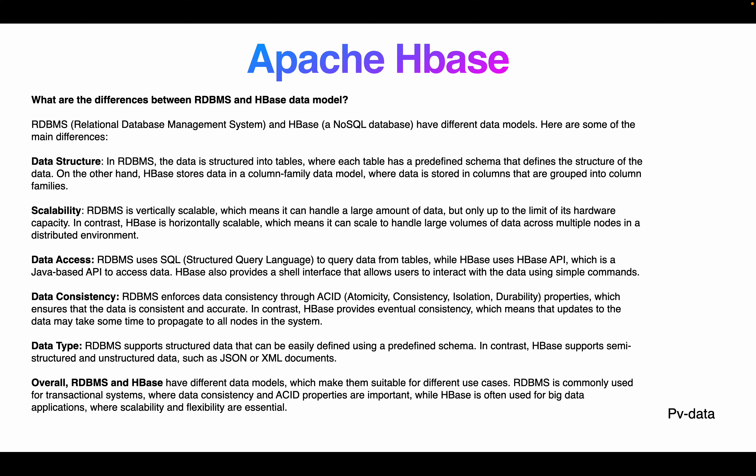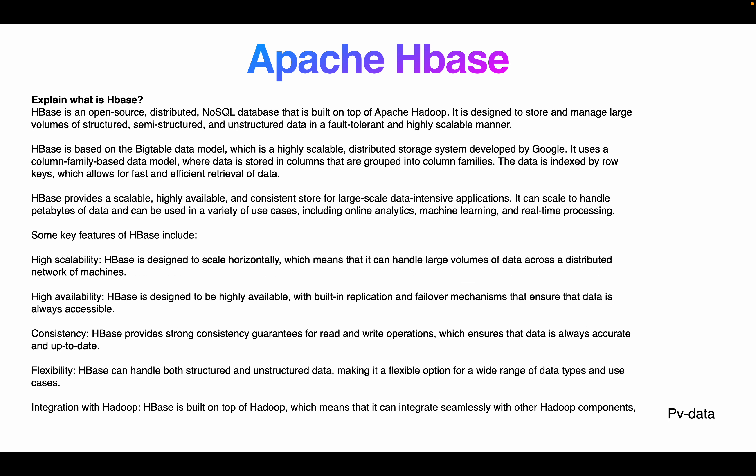RDBMS follows ACID theorem properties which ensure data is consistent and accurate. In contrast, HBase provides eventual consistency, which means updates to data may take some time to propagate to all nodes in the system. On data types, RDBMS supports structured data types defined using a predefined schema, while HBase handles semi-structured and unstructured data such as JSON and XML. RDBMS is commonly used for transactional systems where data consistency is important, whereas HBase is used for big data applications where scalability and flexibility are essential.